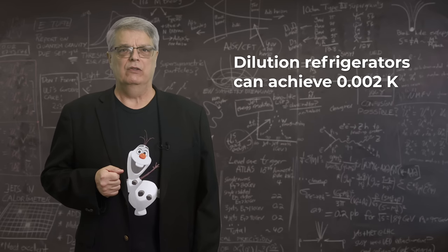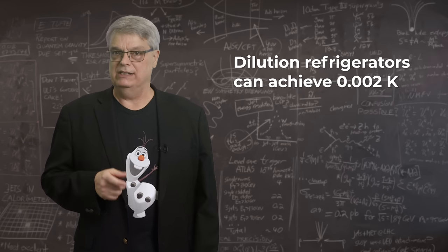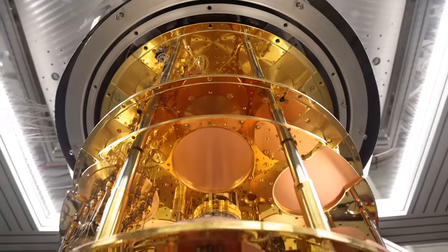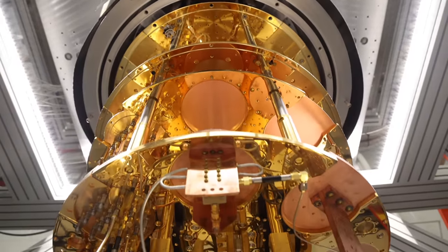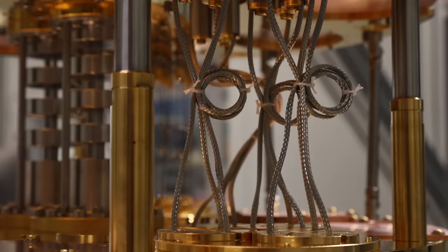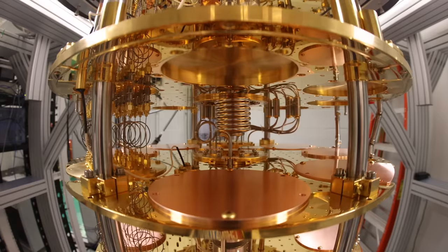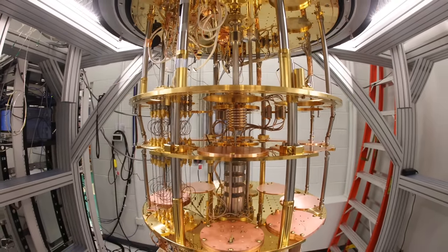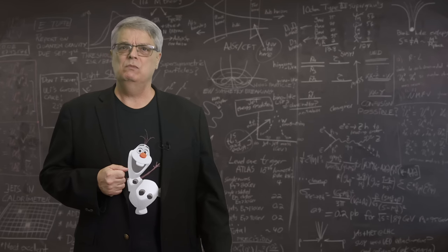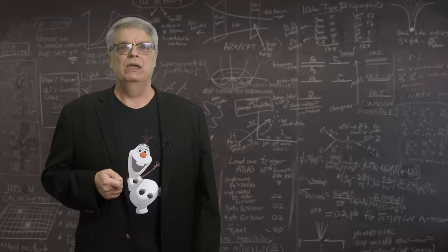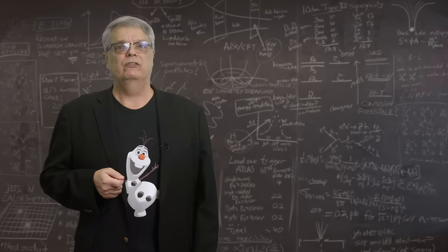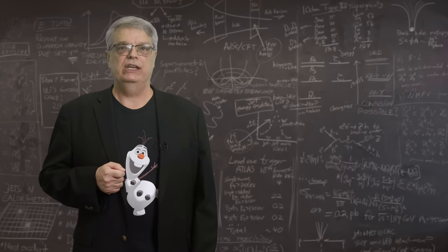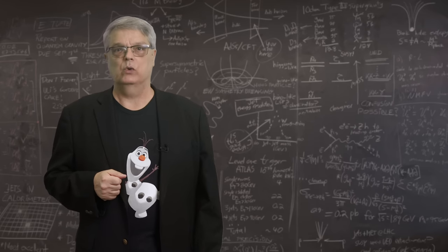That's close enough to absolute zero that I'm not going to keep giving the Fahrenheit and Celsius numbers. And these dilution refrigerators can be super pretty, as you can see here. This one is located at Fermilab, and it operates at 5.5 mK. By the way, I say that the 2 mK limit is a physical one, because at about 2 mK, helium-3 changes phase and that diffusion trick no longer works.